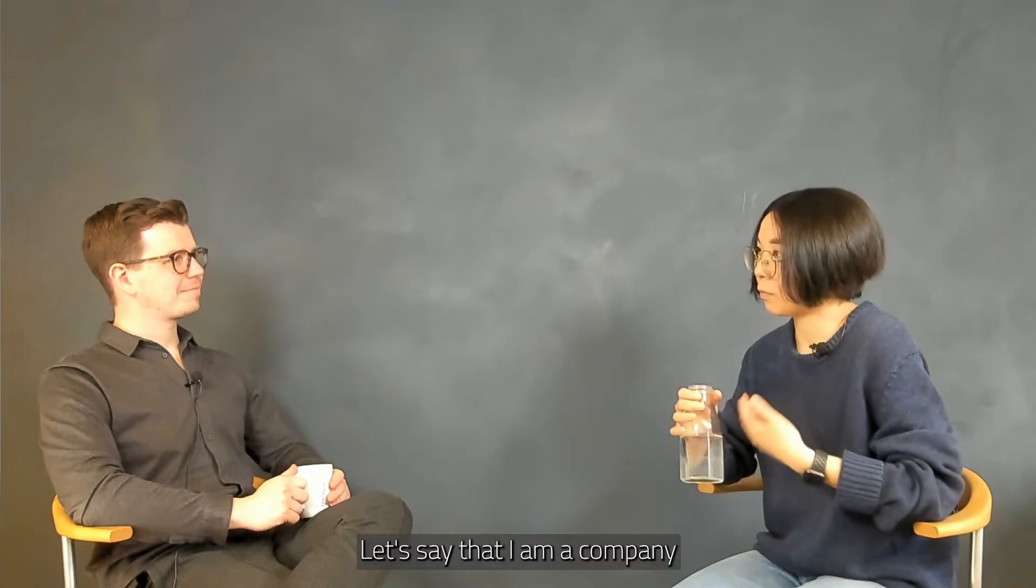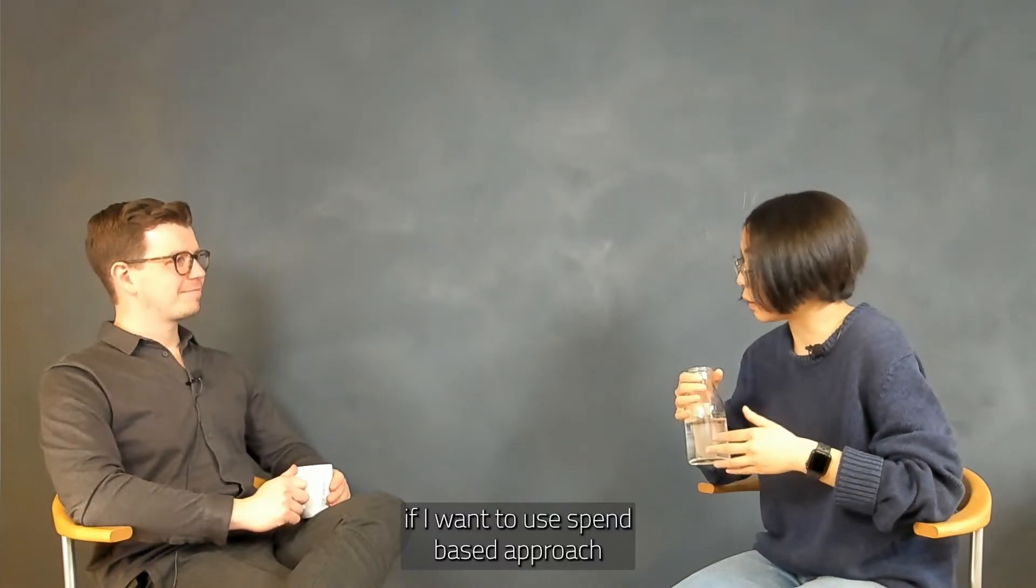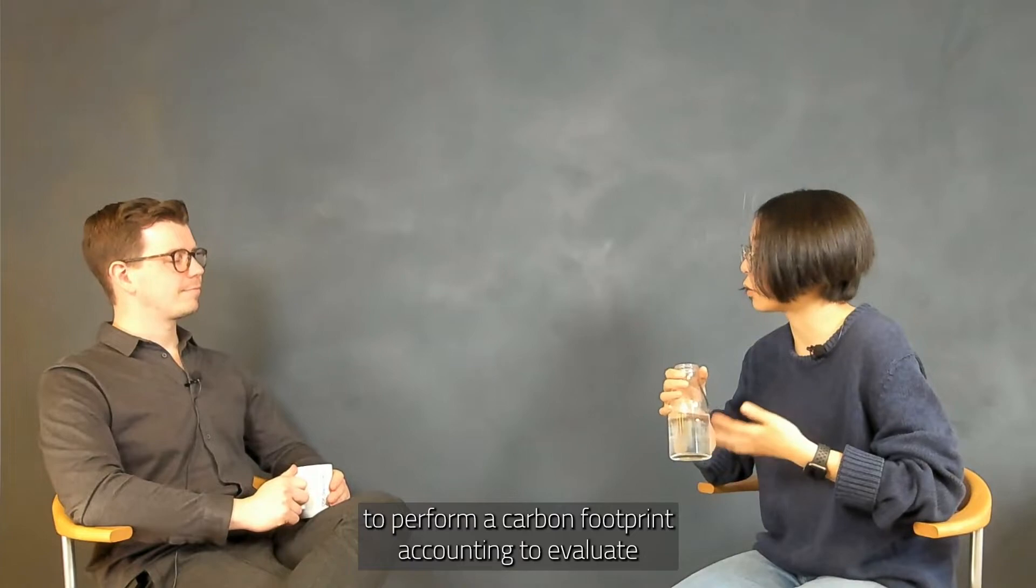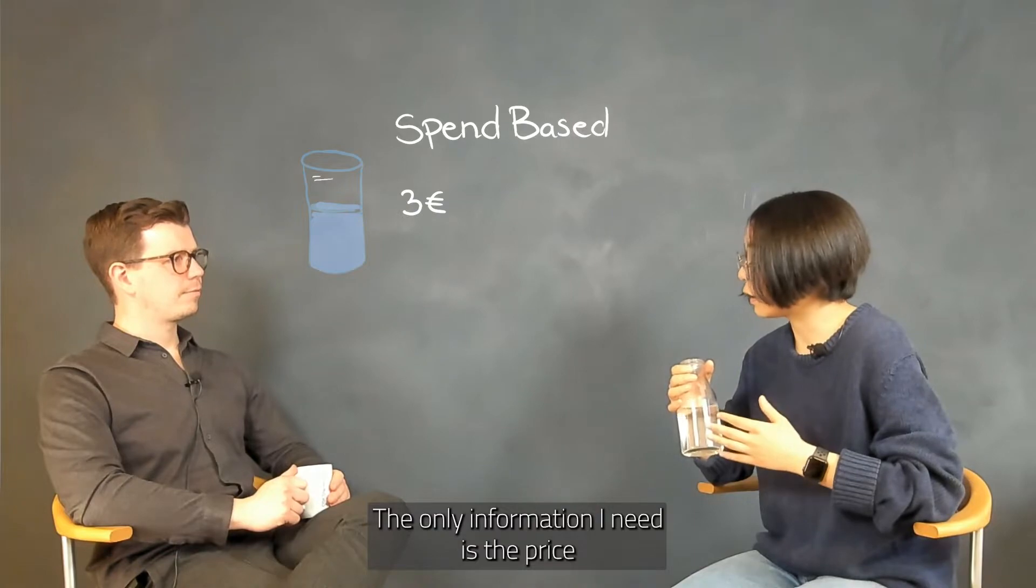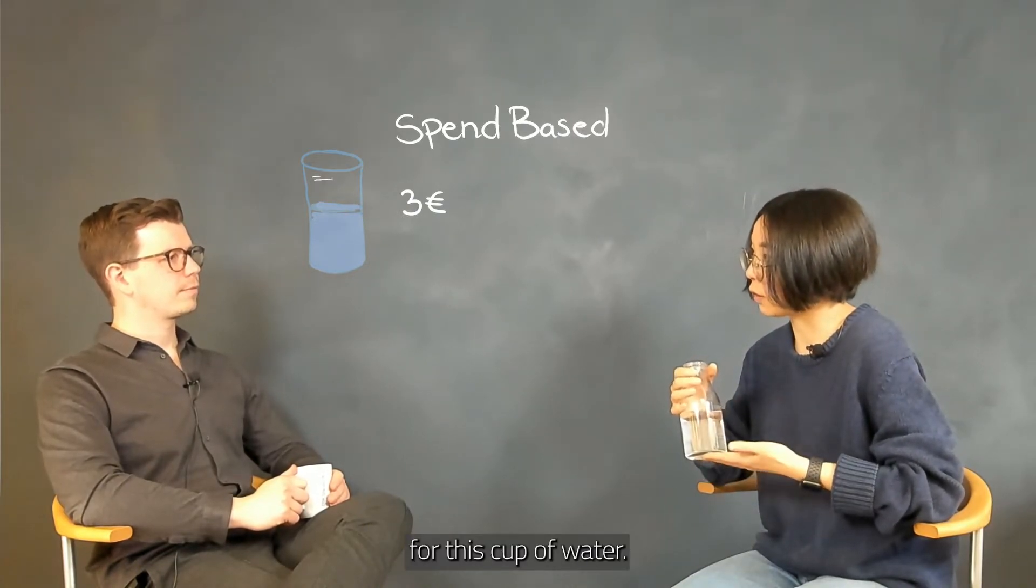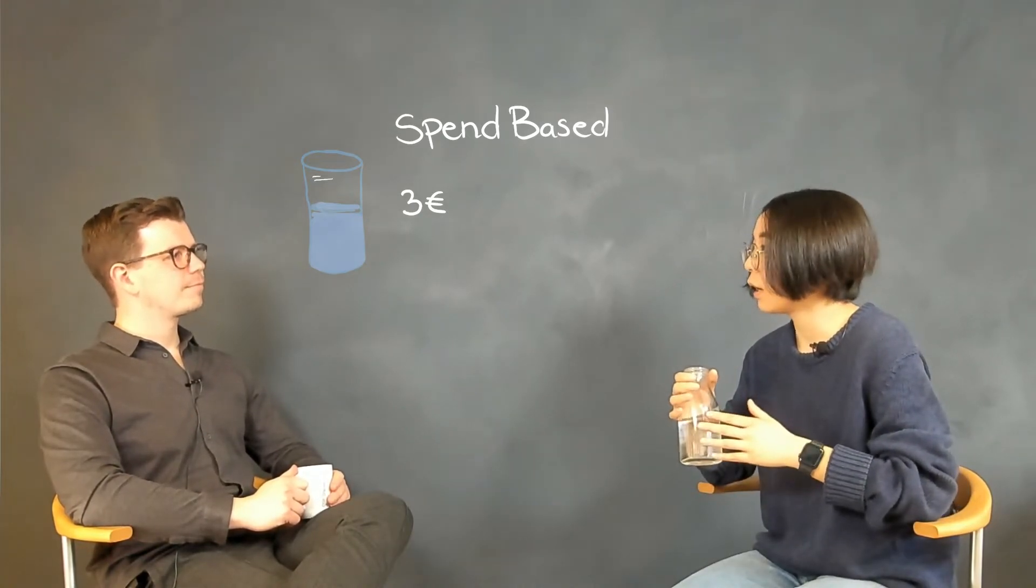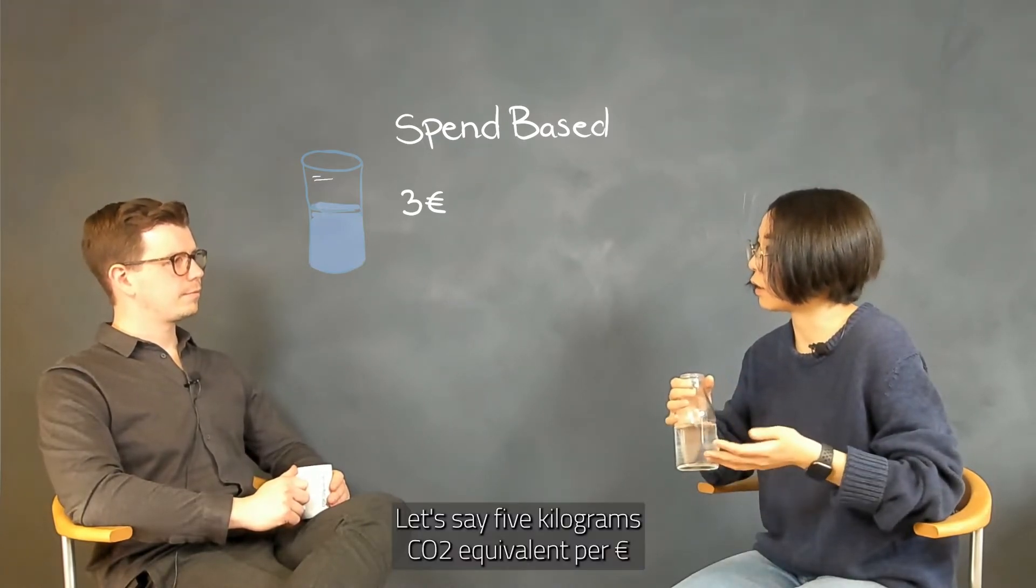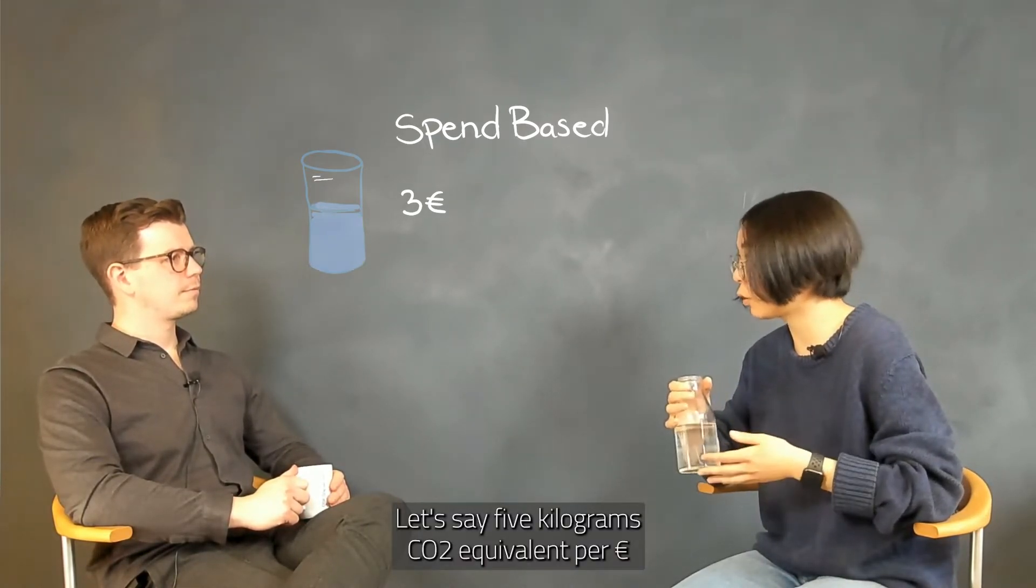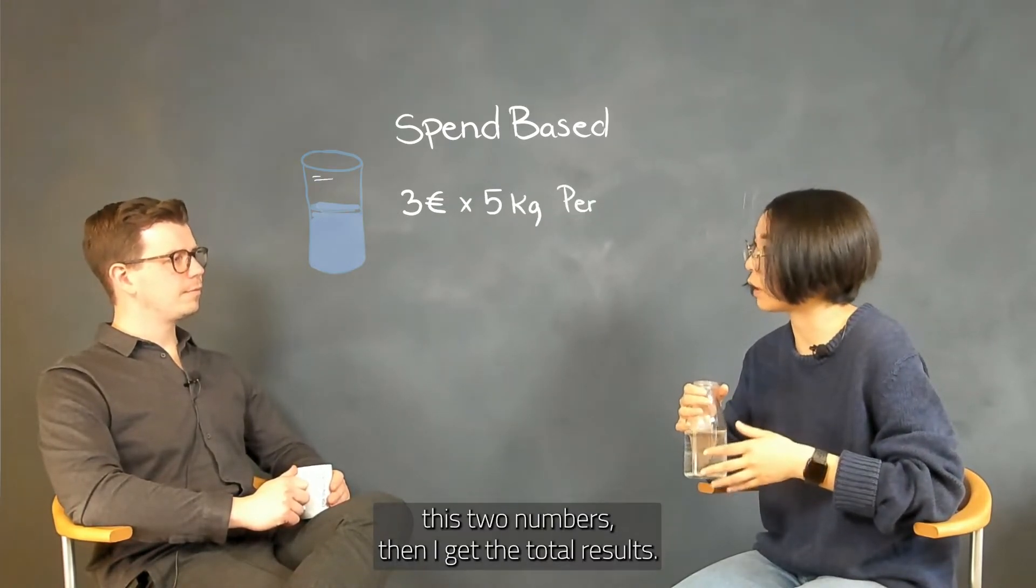Let's say that I am a company and I purchased this cup of water. If I want to use spend-based approach to perform a carbon footprint accounting to evaluate the climate performance of this cup of water, the only information I need is the price for this cup of water. Let's say 20 krona or 3 euros per cup, and then I can search in the database for emission factors, let's say 5 kg CO2 equivalent per euro. Then I multiply these two numbers, then I get the total results.